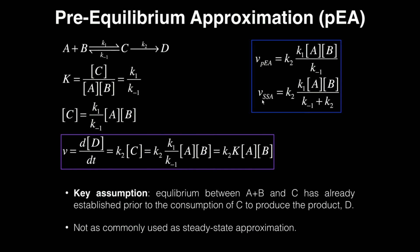So notice with the steady state approximation we have a slightly more complicated denominator. We have K-1 plus K2. In the pre-equilibrium approximation rate, we only have this K-1 in the denominator.